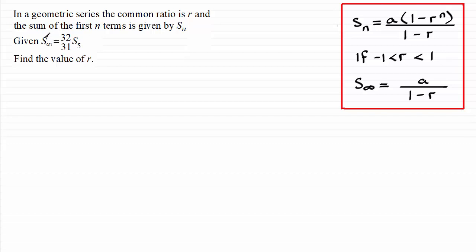So what we do then is the sum to infinity, that's going to be a over one minus r. We've therefore got a over one minus r equal to 32 over 31 multiplied by the sum of the first five terms. So we just need to let n equal five in here.